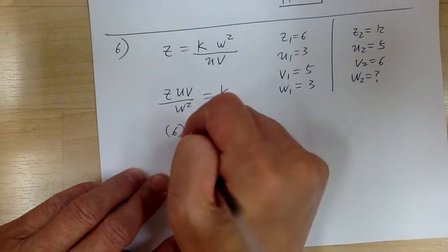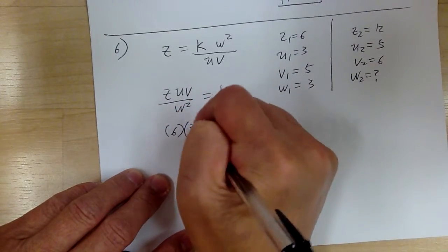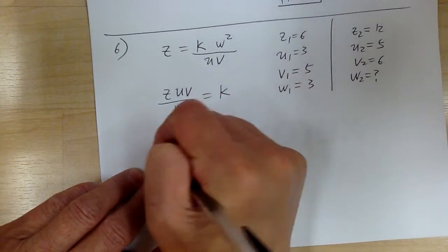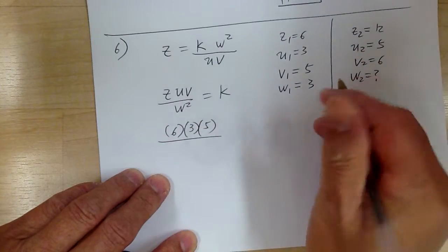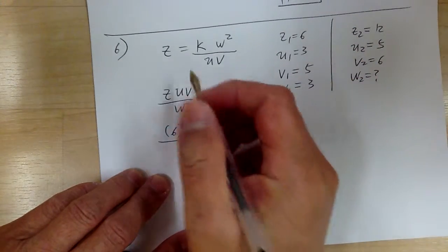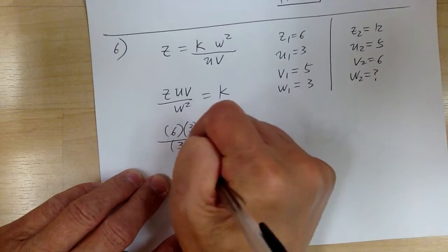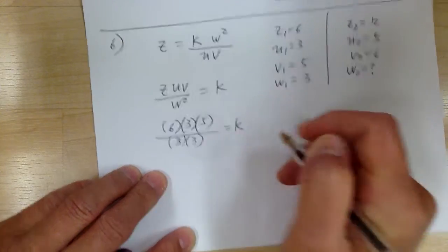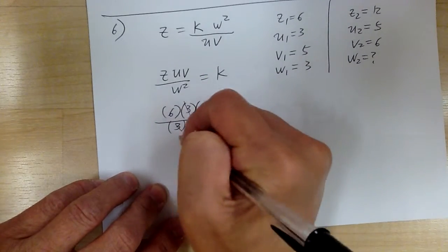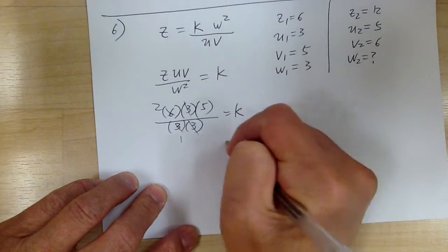So substitute, you get 6, 3, 5, and I'm going to write it two times so I can cancel, right? W squared, right? So this cancels, this cancels. So k equal to 10.